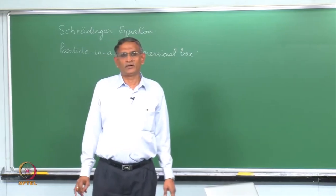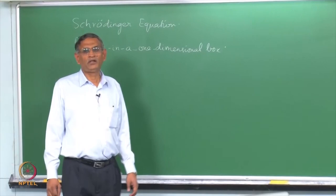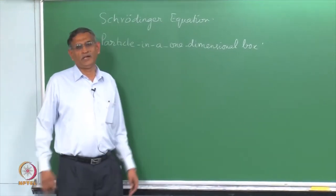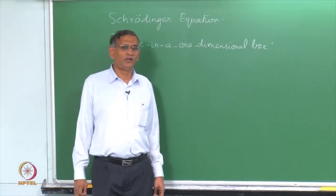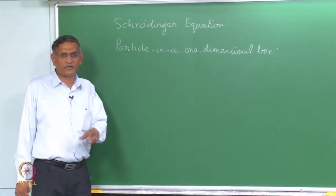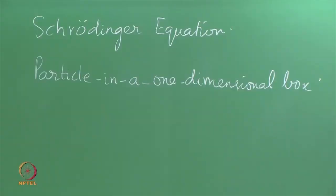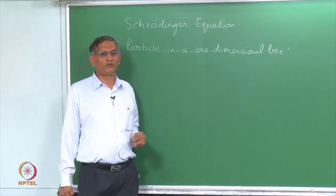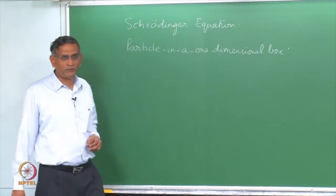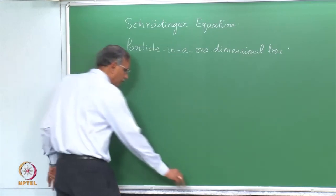Welcome back to the lecture for introductory chemistry using Schrödinger and quantum mechanical methods for atomic structure. In this and the next segment, we will introduce the Schrödinger equation and also do a model problem using the particle in a one-dimensional box model, which is one of the simplest models that we have.